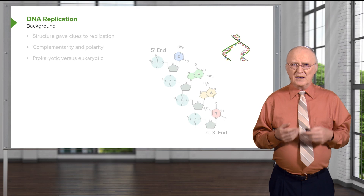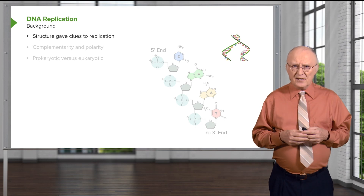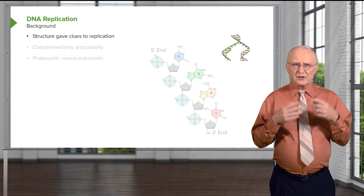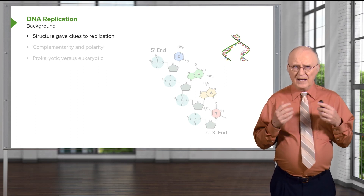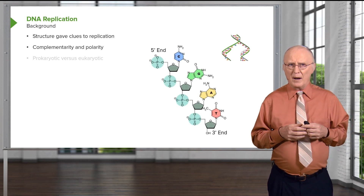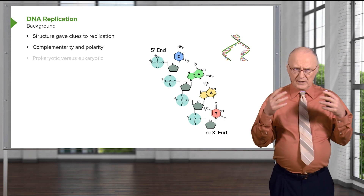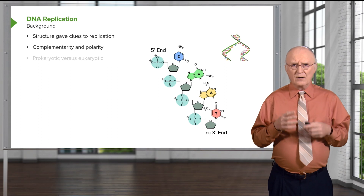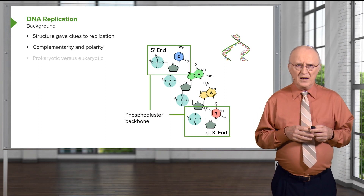DNA replication is a process that is essential for the transmission of genetic information. The structure of DNA, discovered in 1953, gave clues to how it would be replicated. This DNA molecule is complementary — the bases on one strand form complements to bases on the other strand.